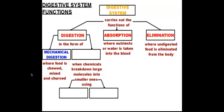The second type of digestion is chemical digestion. In chemical digestion, we use chemical reactions and chemicals to break down large molecules into smaller ones. To do this, we use chemicals called acids, and we also use proteins called enzymes. These enzymes help speed up the digestive process.